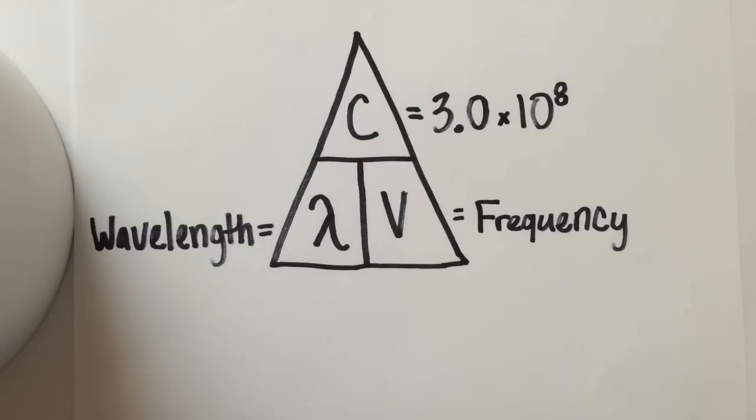So let's start by looking at this triangle equation and defining the variables. C is your speed of light. This is a constant. It will never change. It will always be 3.0 times 10 to the 8th.